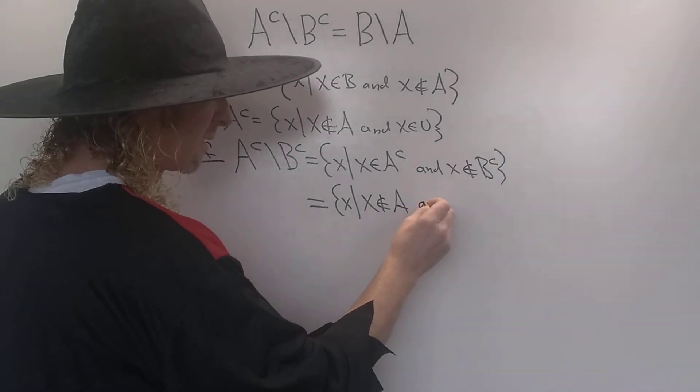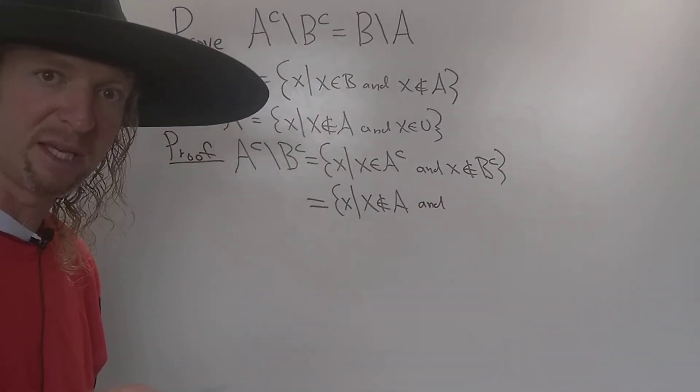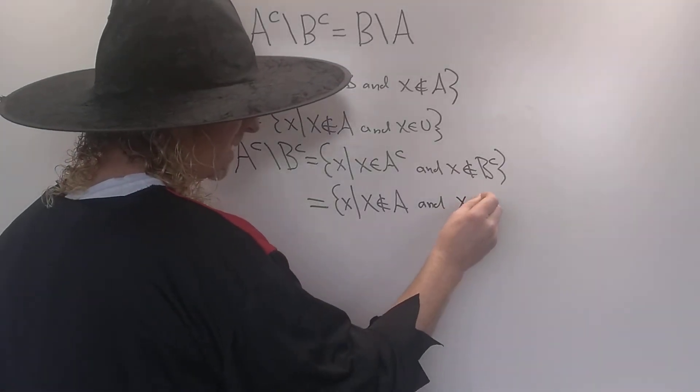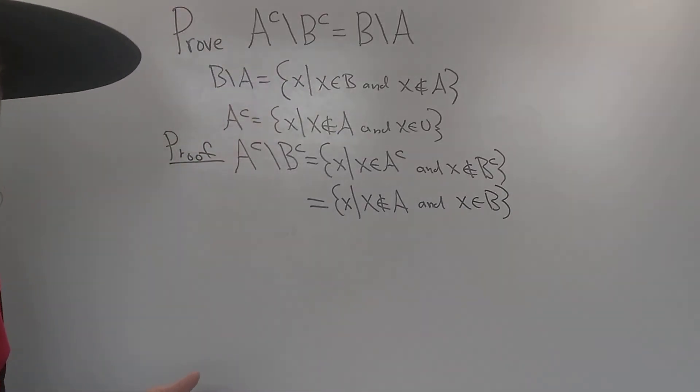And if X is not in B complement, that means it must be in B. So that means X is in B. Because if it's not in the complement of B, it must be in B.